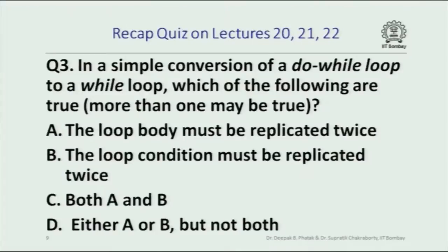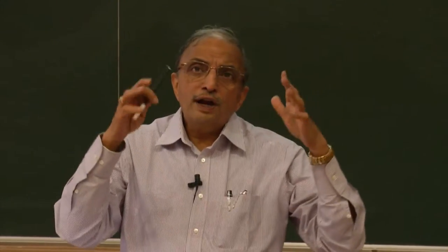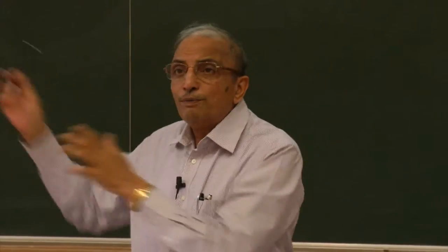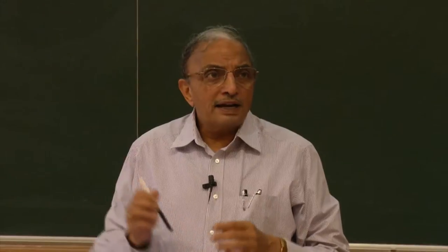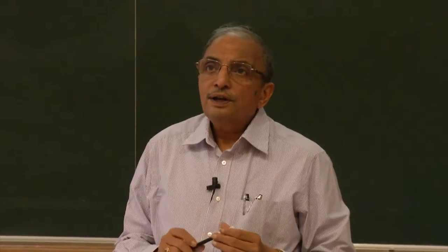In a simple conversion of a do-while loop to a while loop, which of the following are true? A: the loop body must be replicated twice. B: the loop condition must be replicated twice. C: both A and B. D: either A or B but not both. You have to picture a do-while loop, then assume you are rewriting it as a while loop, and determine which of these things you may need to do to implement exactly the same logic.